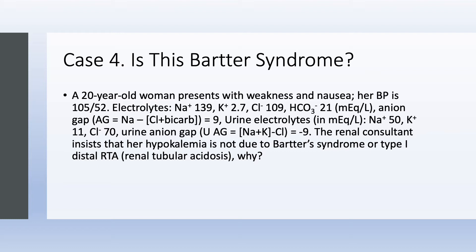Case number 4: Is this Bartter syndrome? A 20-year-old woman presents with weakness and nausea, blood pressure 105/52. Electrolytes: sodium normal, potassium 2.7, chloride 109, bicarb 21, anion gap 9. Urine electrolytes: sodium 50, potassium 11, chloride 70, urine anion gap negative 9. The medical student said this is Bartter syndrome, but the renal consultant said no — this is not Bartter syndrome and not type 1 distal renal tubular acidosis. Who is correct?